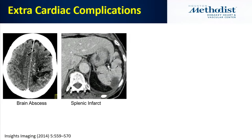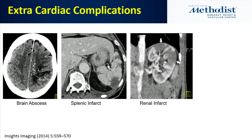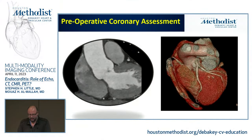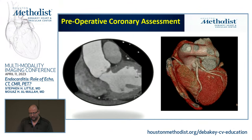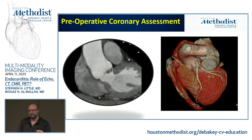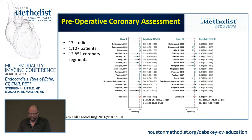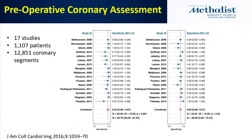For right-sided endocarditis, CT can look for pulmonary septic emboli in the lungs. For aortic valve cases with a highly mobile lesion and a need for coronary assessment, CT is very helpful with high accuracy. Studies through 2016 looking at perioperative CT for coronary assessment show sensitivity around 93% and specificity around 89%.